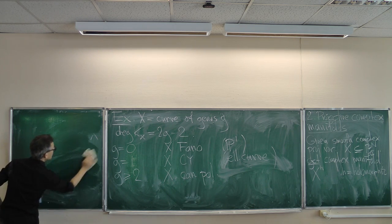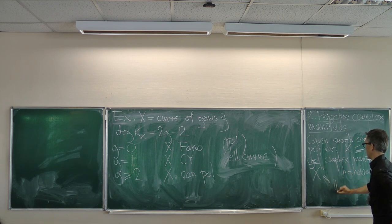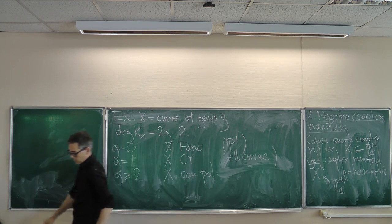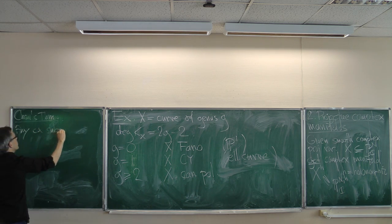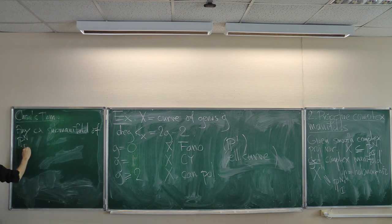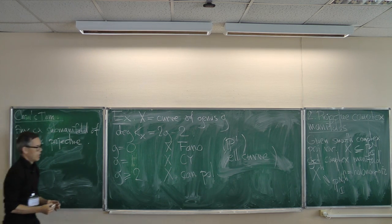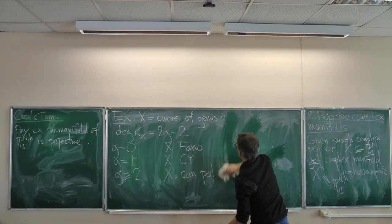As long as X is projective — sitting inside P^N — you have Chow's theorem: any complex submanifold of P^N is algebraic, given by algebraic equations. Once you have a complex manifold, you have additional structure that I want to spend time talking about — in particular additional structure on K_X.